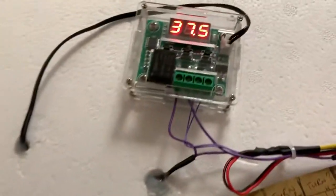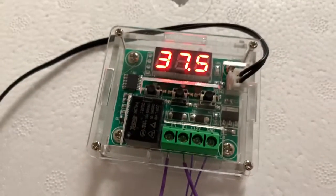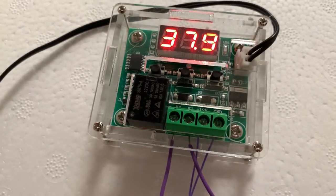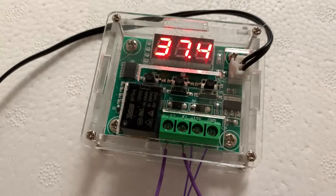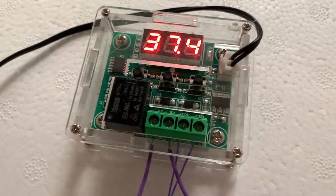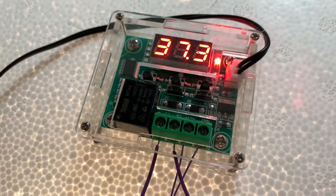This is a thermostat that you can get on eBay, runs off 12 volts. You can set the custom temperature to whatever you want. I've got it set hovering around 37.5 degrees.